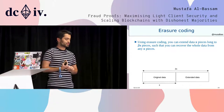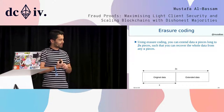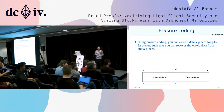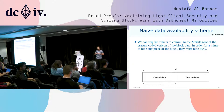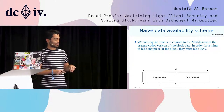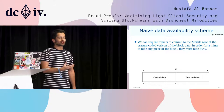Vitalik proposed a neat way to do this called erasure coding. The idea is that if you have some data that is X pieces long, you can blow up that data to 2X pieces long. If you lose any X pieces in that data, you can recover the entire data from any of those X pieces. This no longer becomes a 100% data availability problem — it only becomes a 50% data availability problem because you can recover 100% of the data just from 50% of the data. This means that miners, if they wanted to hide even a single byte, would have to hide at least 50% of the data.